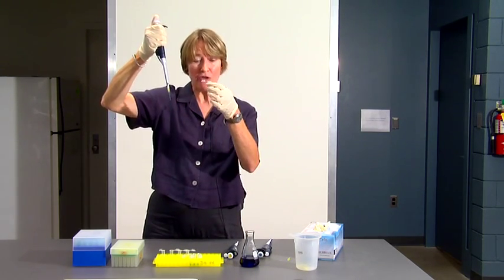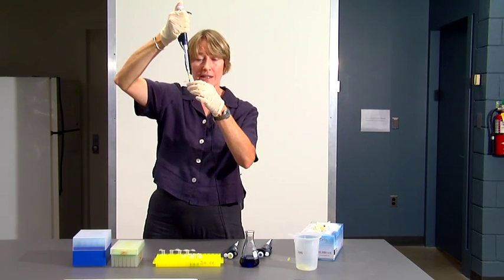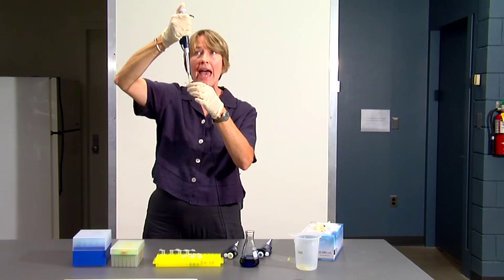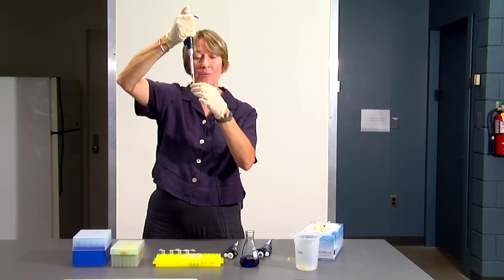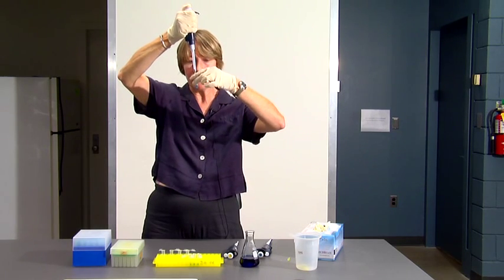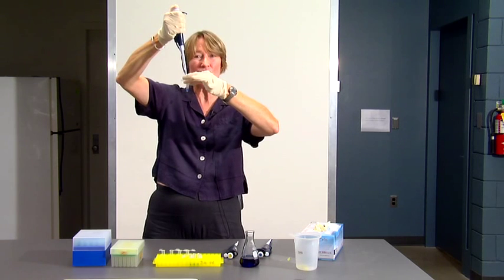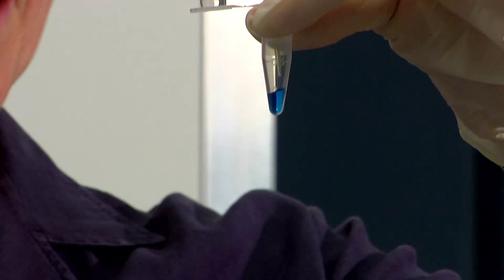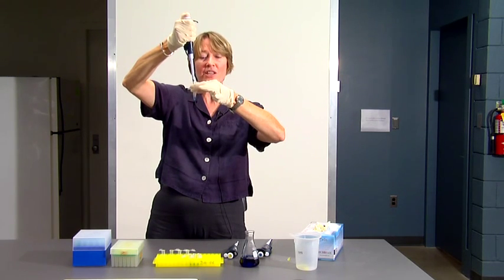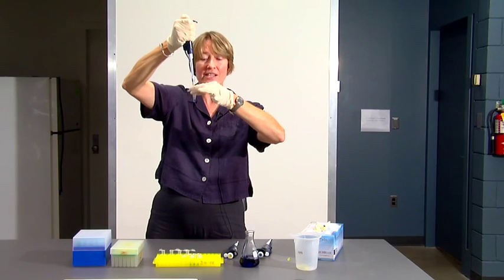I'll then take a microfuge tube and I will put the tip into the tube. And I will now depress the plunger again and release the sample into the tube. And you may be able to see that there's just a tiny drop, hardly even noticeable, still left in the tip of the pipette. This is where you depress it to the second stop to push out that last drop.